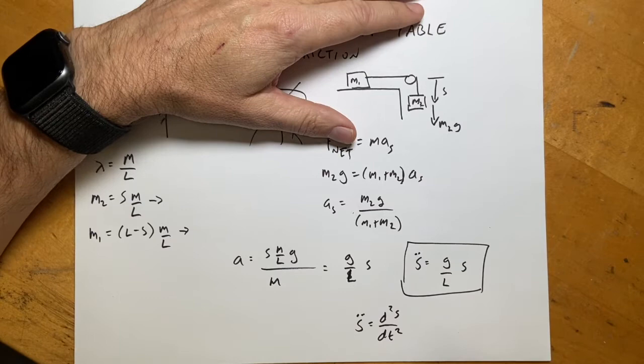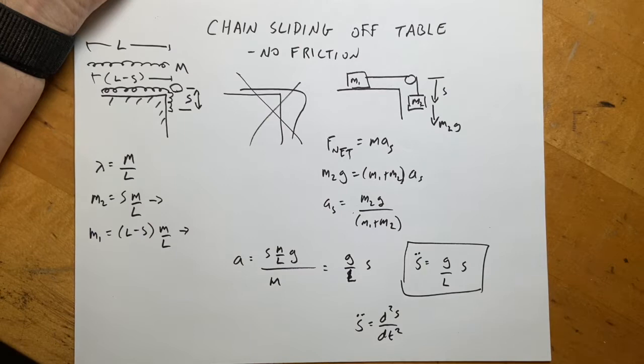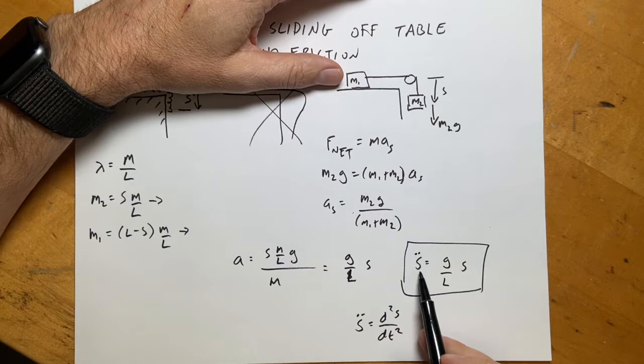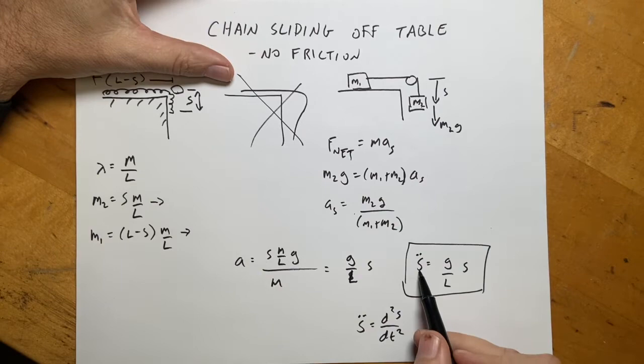And that's where I stopped before — and that's where I'm going to start right now. Because now I want to find how fast the chain is going at any particular time and what the position is as a function of time. I'm going to solve this differential equation.